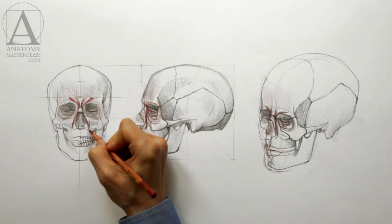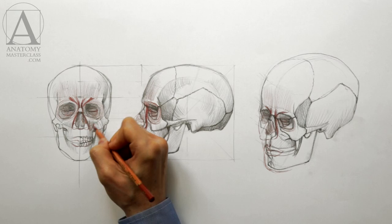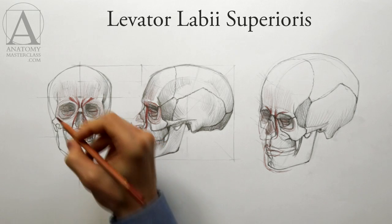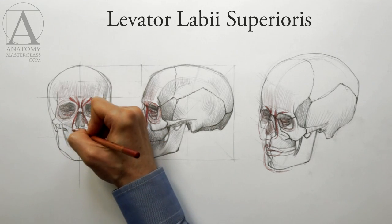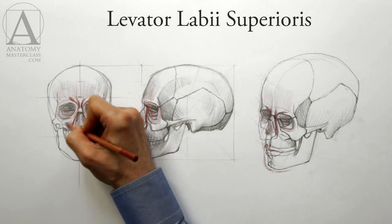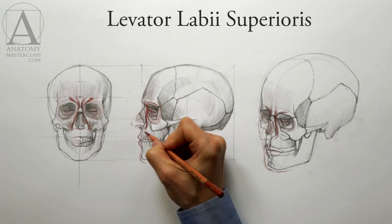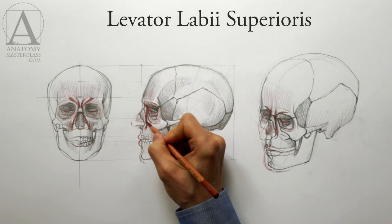On both sides of the nose is a pair of muscles that elevates the upper lip. These muscles can work together to lift the entire upper lip, or separately, lifting only one side at a time.